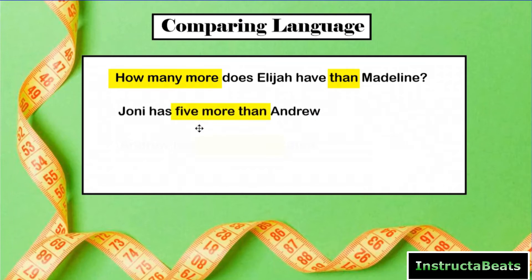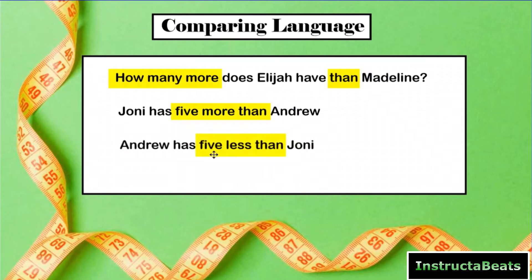You could also be comparing if the word problem says something like 'five more than.' So Joni has five more than Andrew — we're comparing what Joni has and what Andrew has using addition. Or it could say Andrew has five less than Joni, comparing using subtraction. Andrew has five less of it, so we're comparing Andrew and Joni using this comparing language. Once you see this comparing language, that's going to lead you to know you'll be drawing an additive comparison model to help you visually see what's happening.